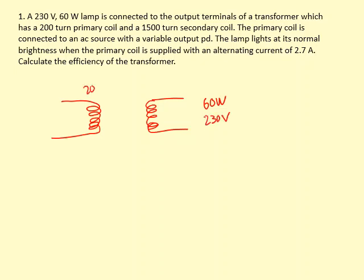The number of turns in the primary is 200, 1500 in the secondary. This is a step-up transformer, and we've also been told the current in the primary, which is 2.7 amps, and we're asked to work out the efficiency. We can work out the efficiency using output power, so basically power in the secondary over the input power.